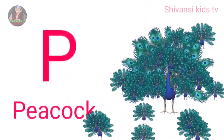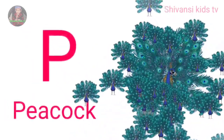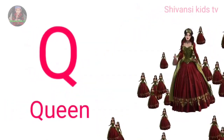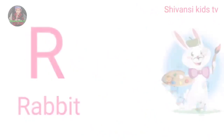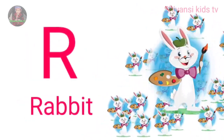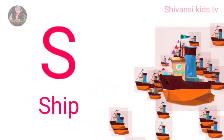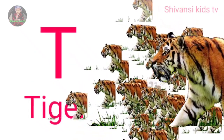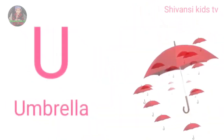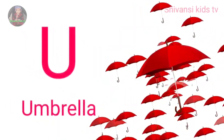P for peacock, Q for queen, R for rabbit, S for sheep, T for tiger, U for umbrella.